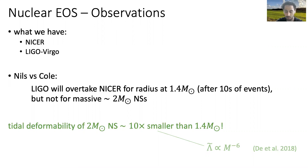We don't know how common these massive objects actually are in merging BNSs in the universe. We don't know the population and whether nature will be kind enough to provide us with such neutron stars that merge. From the galactic population, we know these aren't the types of neutron stars in binaries, but LIGO is starting to show that the extragalactic population may differ.